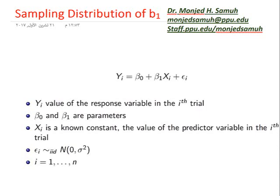Bismillahirrahmanirrahim. This video is related to the Regression Analysis course offered to students who study Applied Mathematics at Palestine Polytechnic University. In this video, I will show you how to find the sampling distribution of b₁, where b₁ is the estimated slope in the simple linear regression model with one predictor variable.